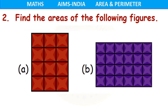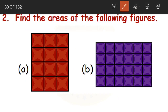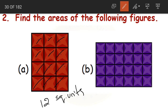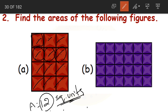Now find the areas of the following figures by counting squares. This is easy — just count the number of squares. Counting gives 12 squares, so the area of this rectangle is 12 square units. We write 'square units' because we are counting unit squares, and we do not know whether the measurement is in centimeters or meters.